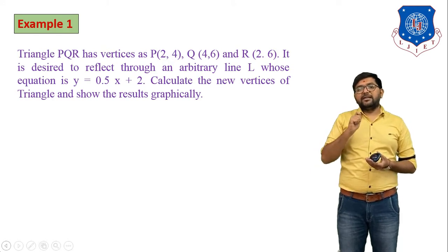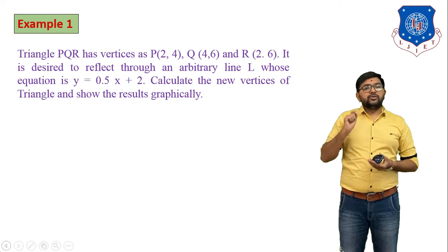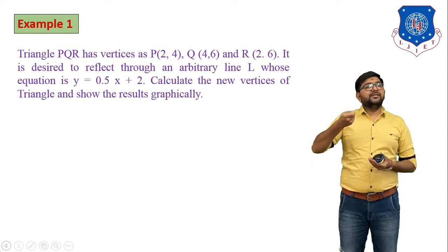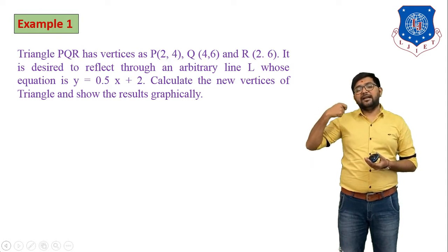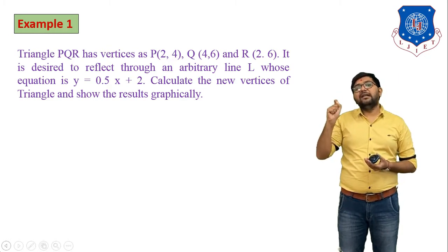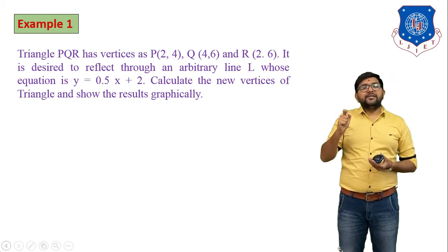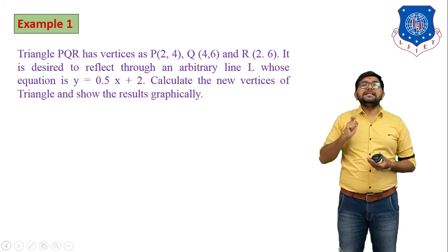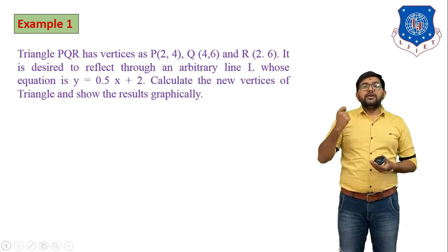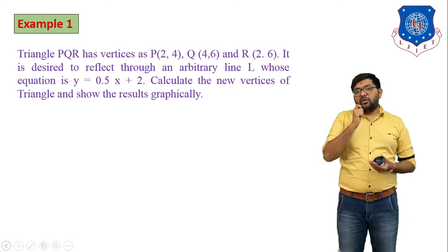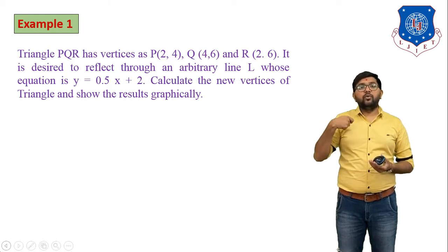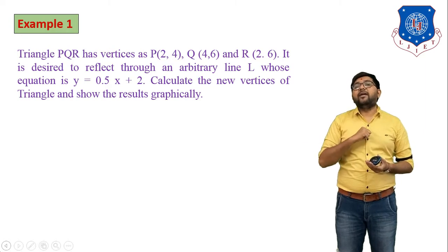The equation of the straight line is y = 0.5x + 2. Comparing with y = mx + c, we can observe that m = 0.5, which indicates the slope of the line with the x-axis, and the constant c = 2. We have to calculate the new vertices of the reflected triangle and show the result graphically — finding the reflection and then plotting the diagram of the reflected triangle.